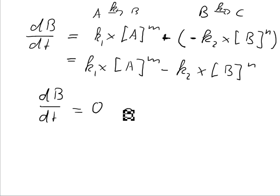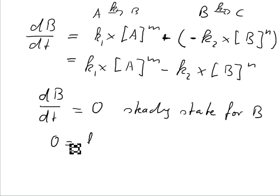And this particular case is called a steady state, the steady state for B. And of course we can calculate that very easily. We can say zero equals k1 times A to the power of M minus k2 times B to the power of N.